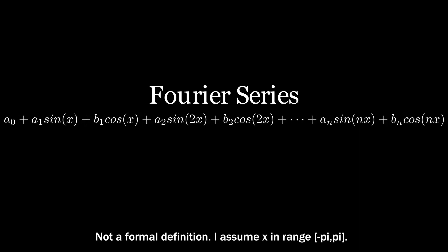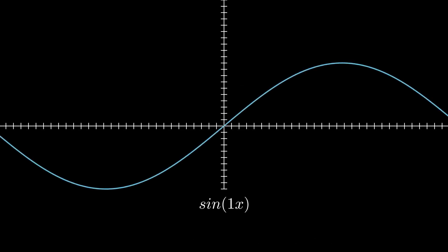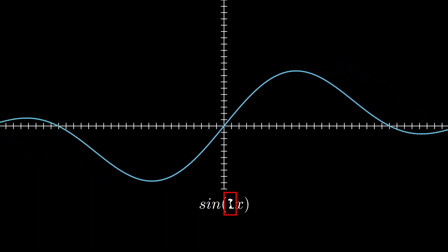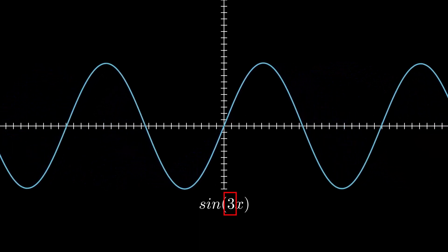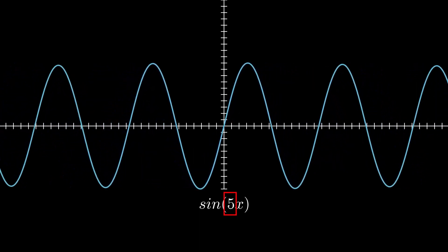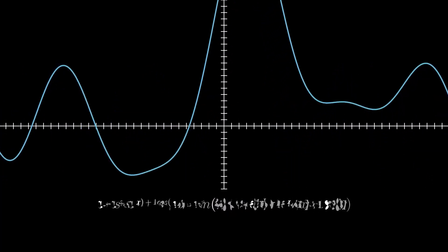Each sine and cosine is multiplied by its own coefficient, again controlling how much that term affects the overall function. n, these inner multiplier values, control the frequency of each wave function. The higher the frequency, the more hills the curve has.